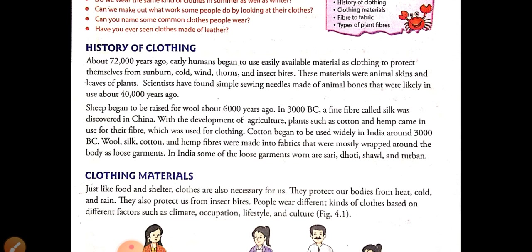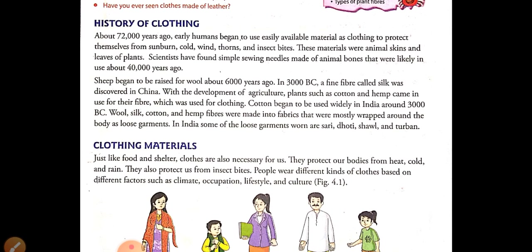Animal skins were helpful to keep their bodies warm. Scientists have also found that early humans used to sew their clothes with the help of sewing needles made from animal bones, used about 40,000 years ago. Then they started extracting wool from sheep, about 6,000 years ago. In 3000 BC, they started using a fine fiber called silk, which was discovered in China.